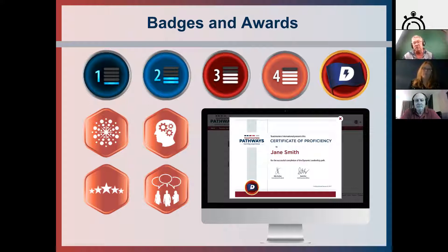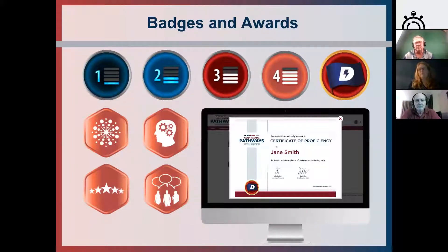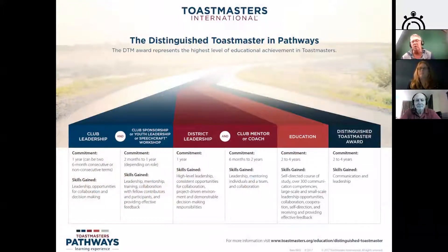You will receive a lovely certificate from Toastmasters International upon completing a path, and if you wish to have a certificate for every level you're able to go into Base Camp and print one yourself, or the VPE might be able to do that for you. The feedback badges — there are actually five, though only four are showing — are for giving feedback to members of your club. If someone does a great speech or assignment role, you can send them a badge to recognize how well they've done.